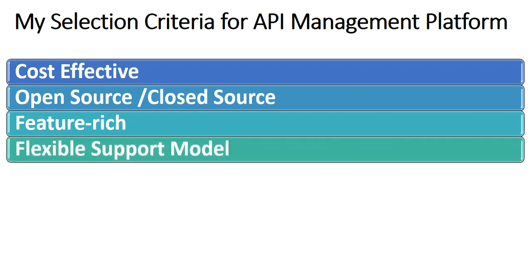The next important point is the support model. You want to make sure that the support model provided by the API management platform or vendor is flexible enough — you don't want to stick to whatever they throw at you. You want them to look into your requirements and come up with a customized, flexible support model. For example, if you opt for an open source API management platform, you will want to discuss what kind of support they are going to provide, how they will deliver bug fixes, and for incident support, what the process is to reach the back-end developers or support teams.